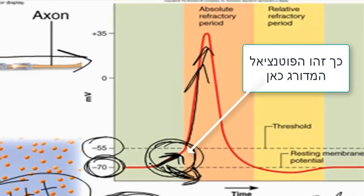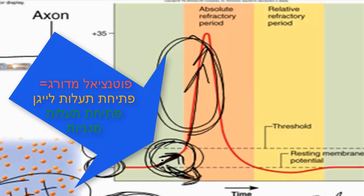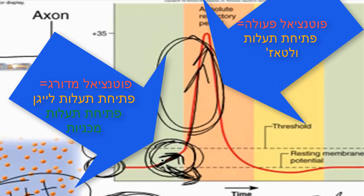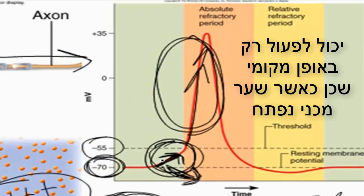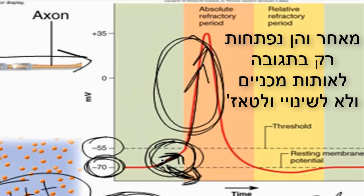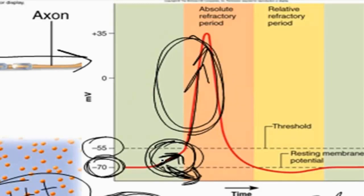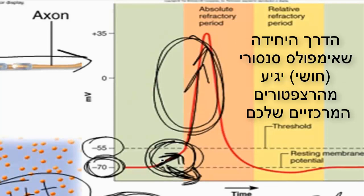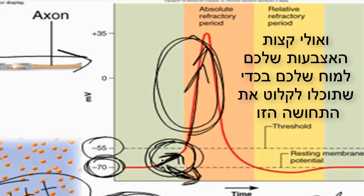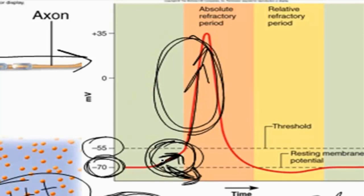The graded potential is this initial change, and the action potential is what follows. Graded potentials result from opening of mechanically-gated or ligand-gated ion channels, while the action potential results from the opening of voltage-gated ion channels. Graded potentials can only act locally, because when a mechanically-gated ion channel opens and depolarizes the membrane, it does not affect the opening of other mechanically-gated ion channels — they only open in response to mechanical stimulus, not voltage changes. So a graded potential does not travel down the length of the neuron. You need to open voltage-gated ion channels for that to happen, and the stimulus must be strong enough to create an action potential for a sensation to be perceived by the brain.